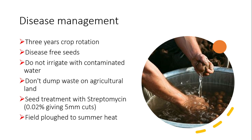Do not irrigate with contaminated water — we must not irrigate from a contaminated field to a healthy field. Don't dump waste on agricultural land where you want to grow potato. Seed treatment with streptomycin could be done, and fields should be fallowed during summer heat for eradication of the bacteria.